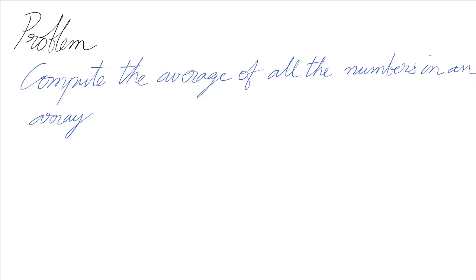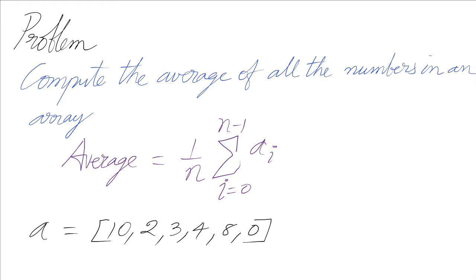Let's work through the problem to compute the average of all the numbers in an array. The average is nothing but the sum of all the numbers from the first element to the last element divided by number of elements. So given a list with these numbers, the output will be 4.5.